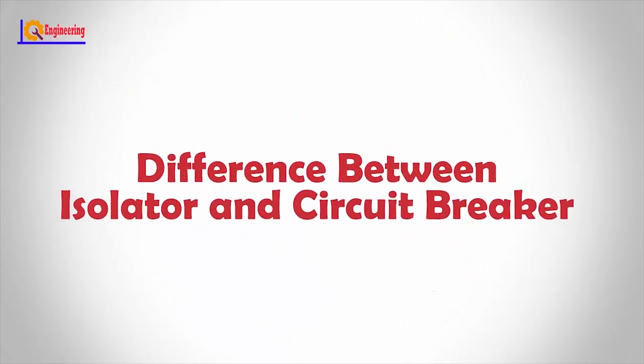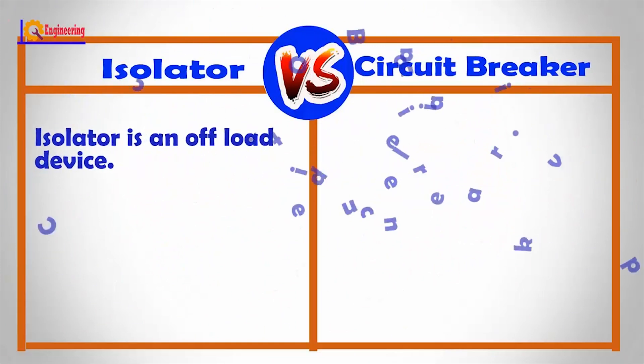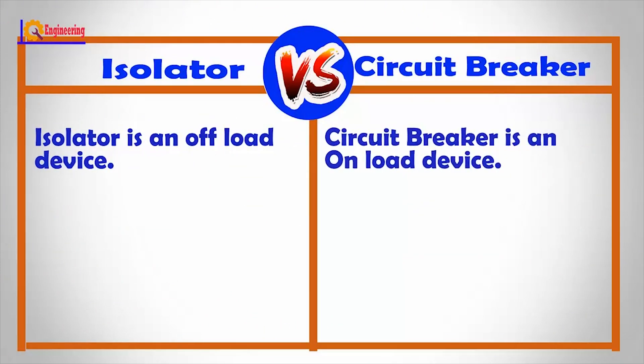The differences between isolator and circuit breaker are given below in tabulated form. An isolator is an offload device, while a circuit breaker is an onload device.